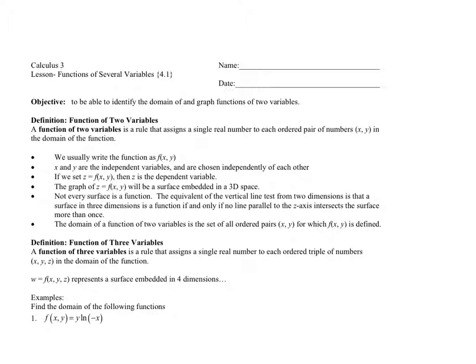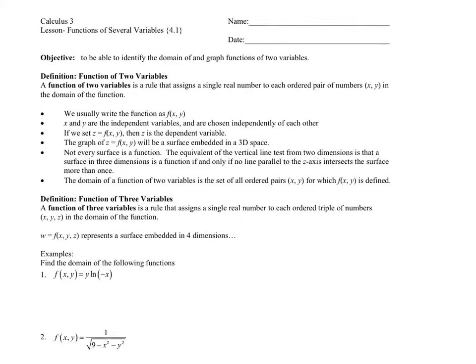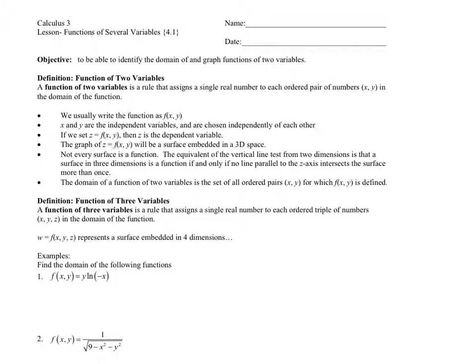We all know what y equals x squared looks like. In three dimensions, we could probably start to figure out what x, y squared looks like — plot some points and get a sense of what that surface would look like. But if we're doing a function in three variables — x, y, z — no idea what that's going to look like. So certain forms of technology are going to become really useful. One form I recommend is GeoGebra. If I want to get a feel for what these three-dimensional surfaces look like, it's definitely worth your time.